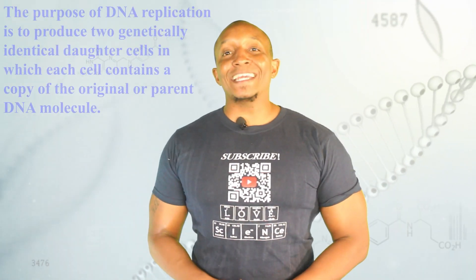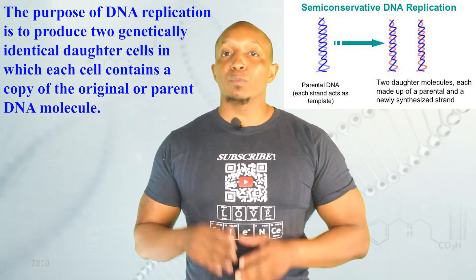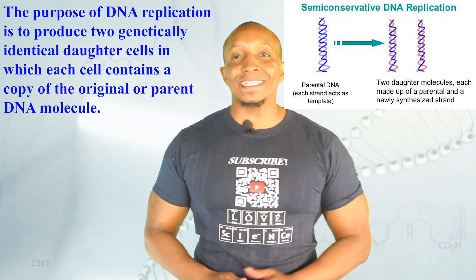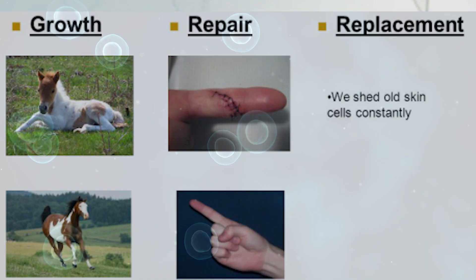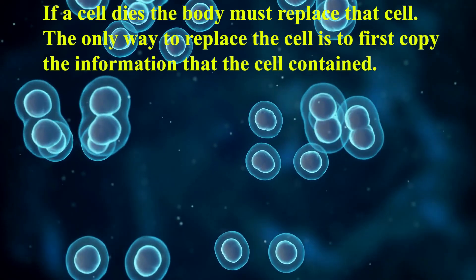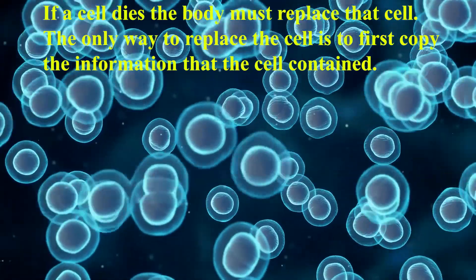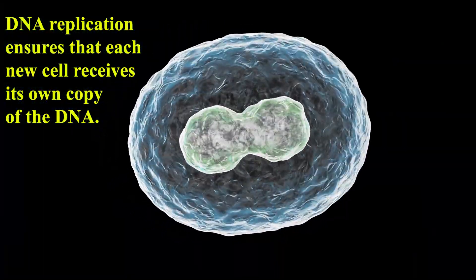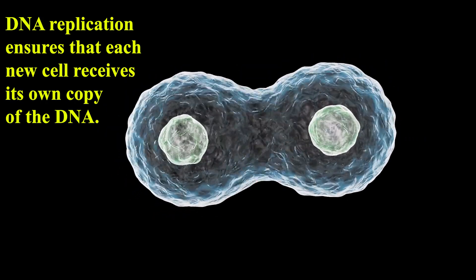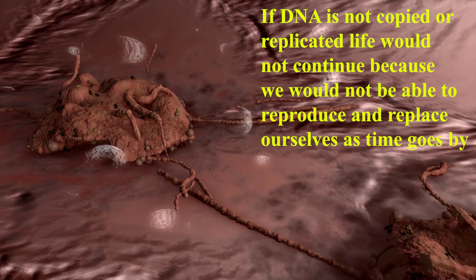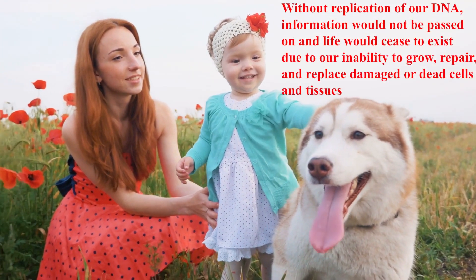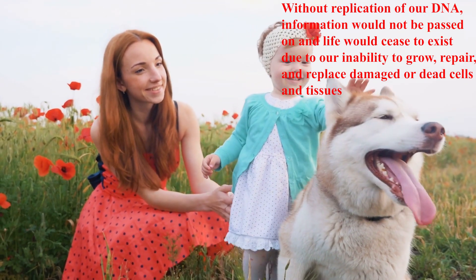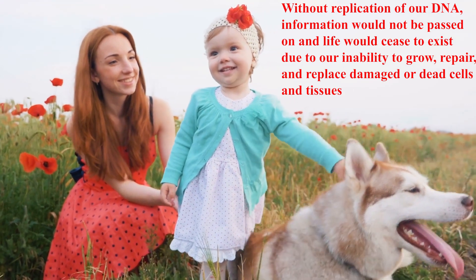In summary, the purpose of DNA replication is to produce two genetically identical daughter cells, each containing a copy of the original or parent DNA molecule. This is critical for cell division during growth or repair and replacement of damaged tissues in the body. If a cell dies, the body must replace that cell, and the only way to do so is to first copy the information that the cell contains. DNA replication ensures that each new cell receives its own copy of the DNA. Without the copying of DNA, life would not continue because we would not be able to reproduce and replace ourselves. Life is dependent on the information stored in our DNA.